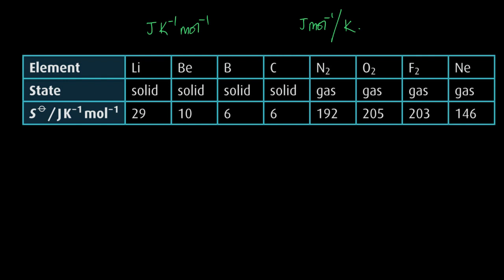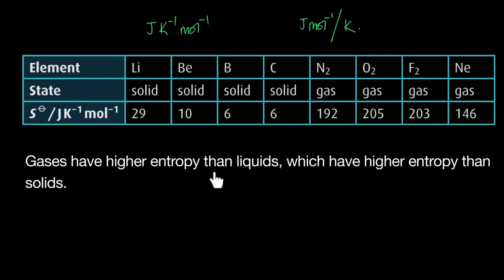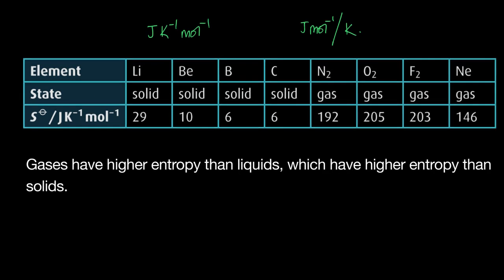This is not the same as enthalpy — you can never know the individual enthalpy of any reactant or product, only the enthalpy change. But with entropy, you can know the entropy of each individual element, reactant, product, and compound. Looking at period three elements, you'll notice that gases generally have a higher entropy than solids. That's the rule of thumb: gases have higher entropy than liquids, and liquids have higher entropy than solids.